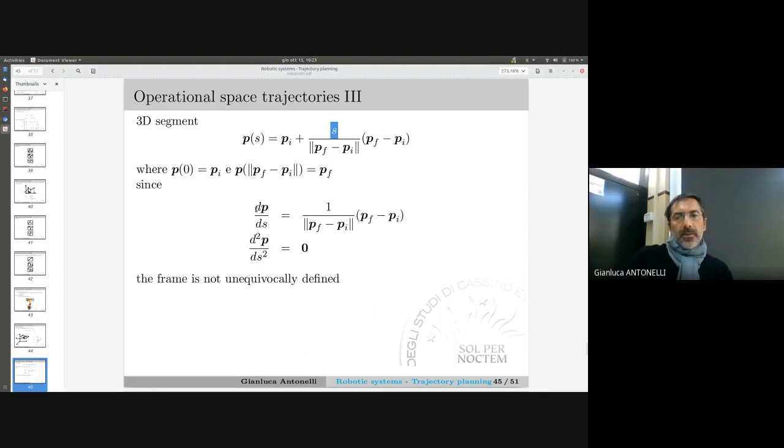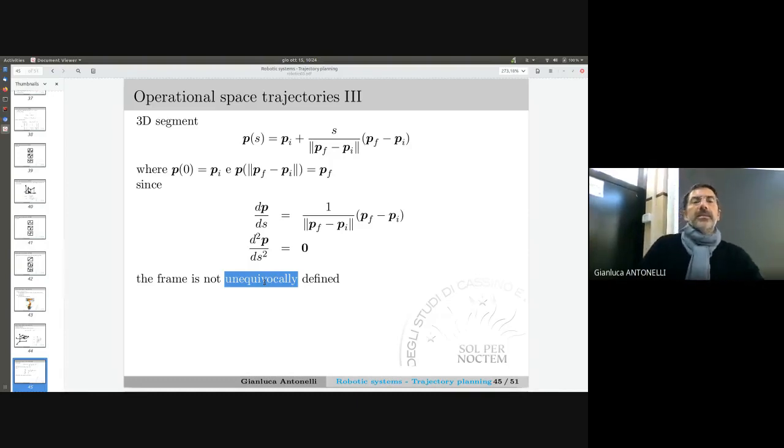Now, what is the velocity? Basically, if I have a segment, the velocity is always exactly parallel to that segment, and this can be noticed by computing the partial derivative with respect to s. This is the unit vector pointing from the initial to the final. We don't have the second derivative, it's equal zero because the curvature is zero, so the frame is not defined in a unique way. You can decide where to put the other two, but what is important is that the 3D segment can be defined really easily.